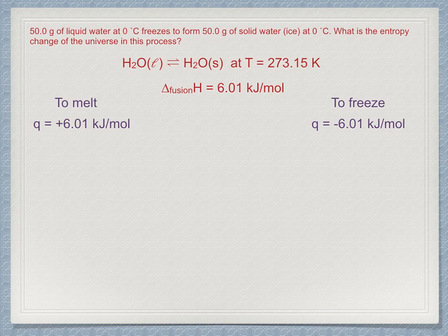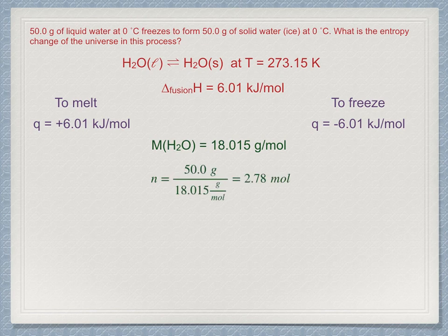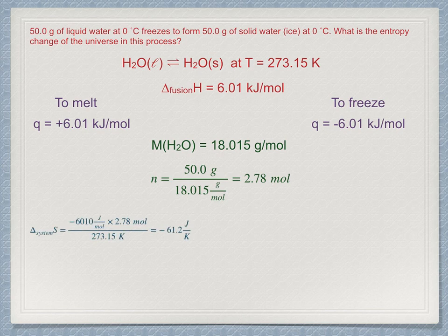Now, change the 50 grams into moles with the molar mass of water. So n is 2.78 moles. The entropy change in the system is, therefore, ΔS equals minus 6,010 joules per mole times 2.78 moles divided by 273.15 Kelvin, which is minus 61.2 joules per Kelvin.